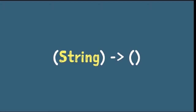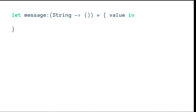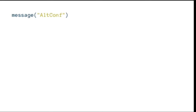In Swift, we can describe a callable simply with its input and output, separated by a dash and a greater-than arrow. We can define a constant that's callable using similar syntax, and you can set that to a closure just by adding curly braces and naming the items. Function declarations work the same way — they can be described as taking a string and returning nothing. Functions and closures work the same way: you just use the name, brackets, and pass the arguments. This brings a lot of interchangeability, since functions and closures can be interchanged.